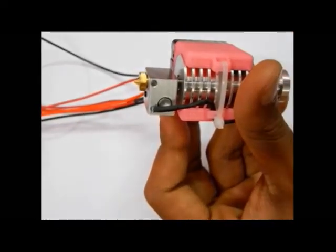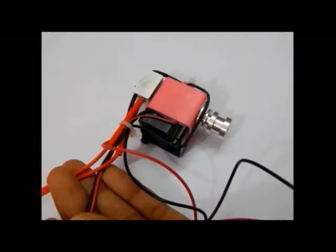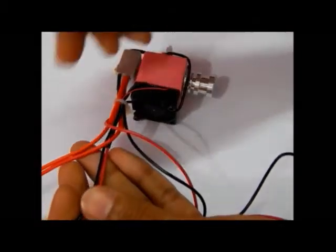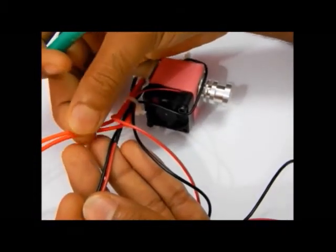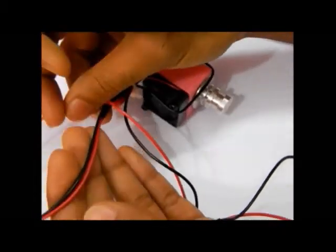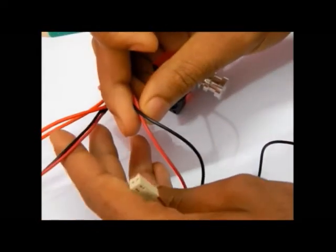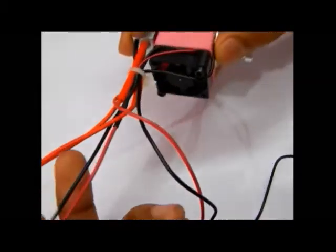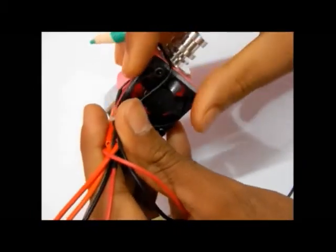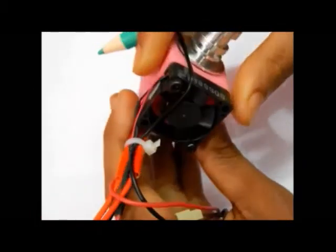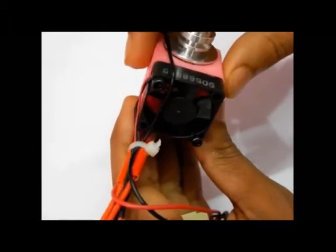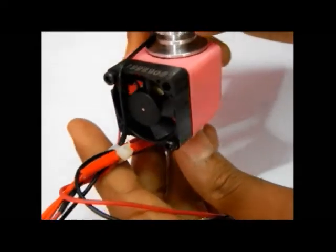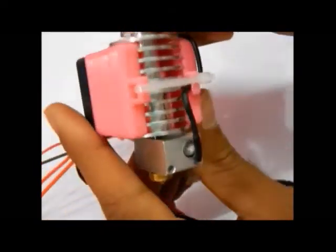The hotend has six wires in total. These thick red wires are for the heater cartridge of the hotend. These red and black thin wires are for the thermistor, and one more pair of red and black thin wires are for the extruder fan. Please note the extruder fan must be connected directly to the 12-volt power supply coming out from the SMPS, because the extruder fan must be on whenever the printer is on.